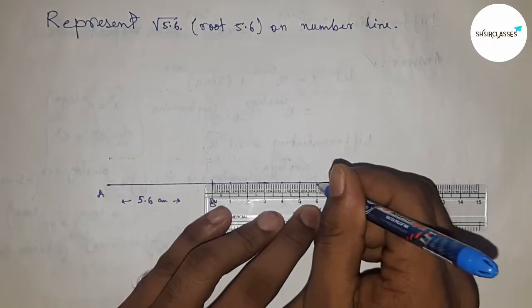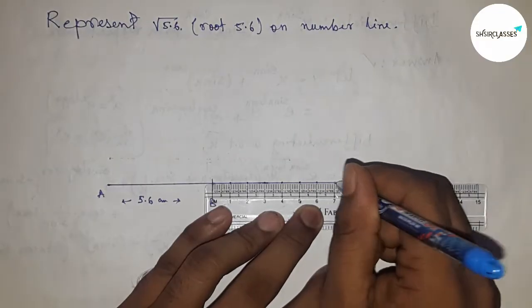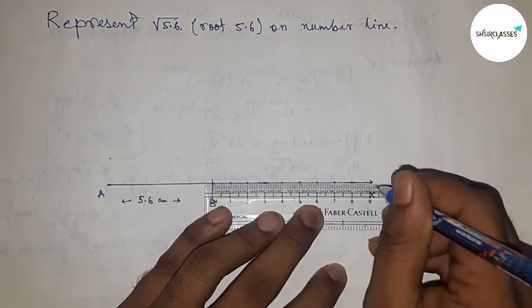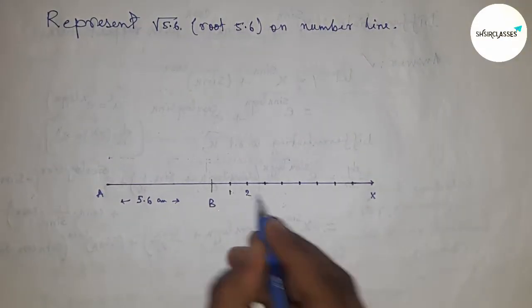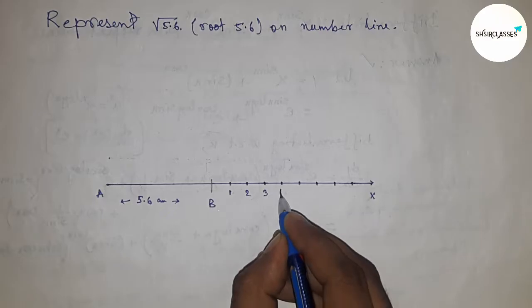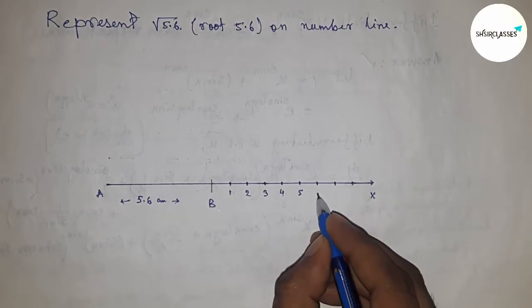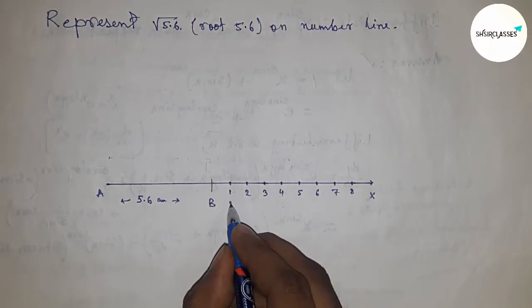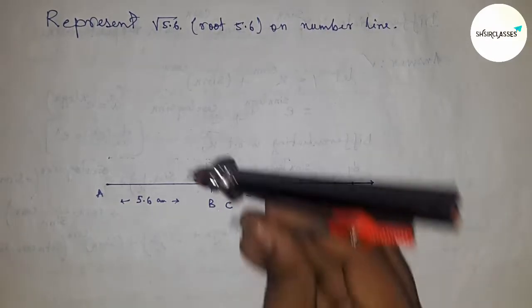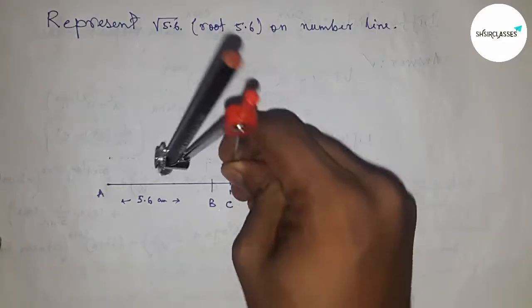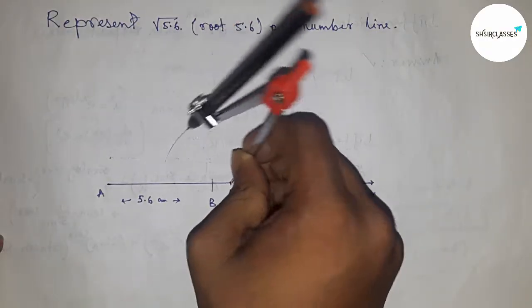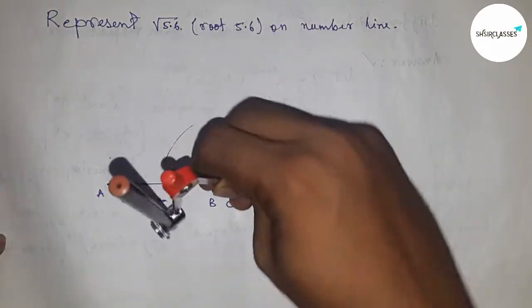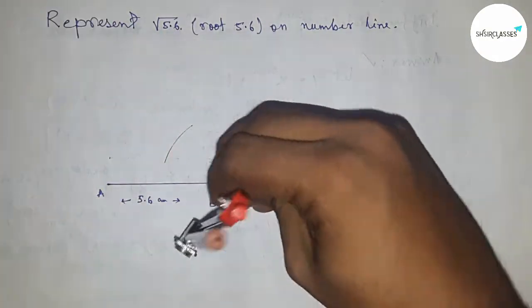Next, mark the line from B to X and mark the numbers on the line: one, two, three, four, five, six, seven, eight. This marked point is C.